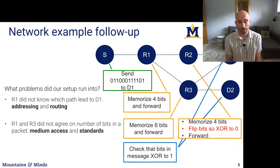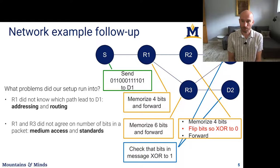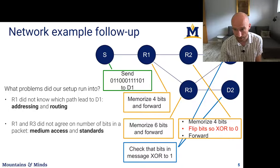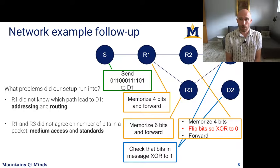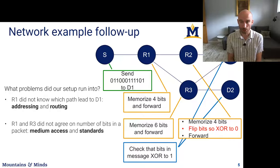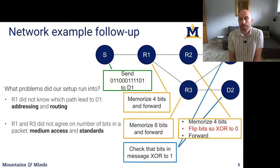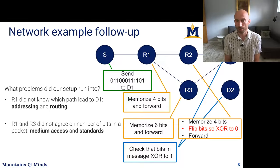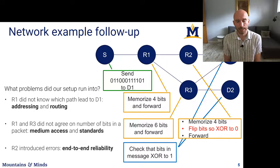Another problem: R1 and R3 didn't agree on the number of bits in a packet. R1 wants to forward four bits but R3 waits for six bits before doing anything. Those routers need to agree on what constitutes a packet. R1 and R3 could be run by different organizations or made by different manufacturers, so there needs to be some overall standard for what makes a packet, how long to wait before closing it, or what signal indicates a set of transmitted bits is finished and ready to forward.